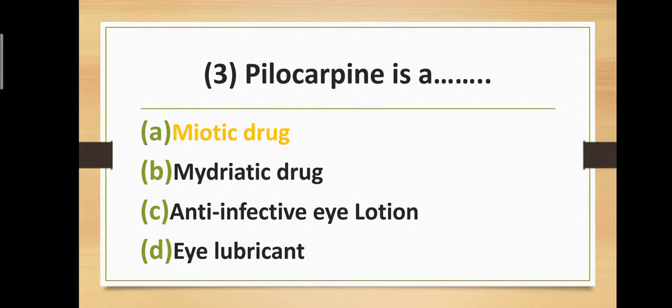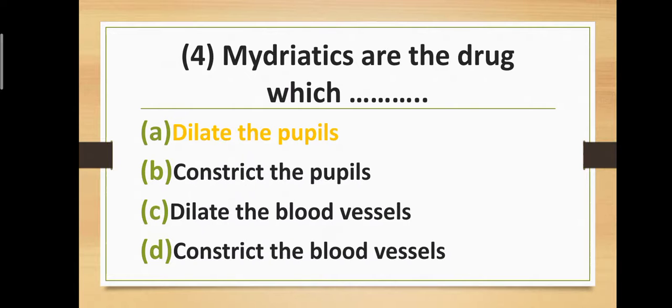Question three: Pilocarpine is a — Option A: Miotic drug. Option B: Mydriatic drug. Option C: Anti-infective eye lotion. Option D: Eye lubricant. Correct answer is Option A — Miotic drug. Pilocarpine is a miotic drug.